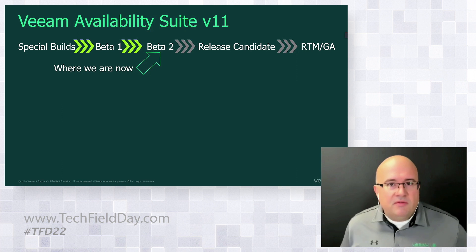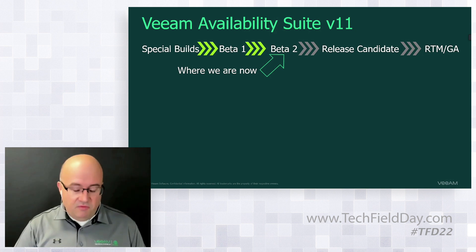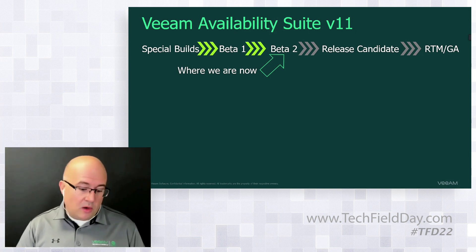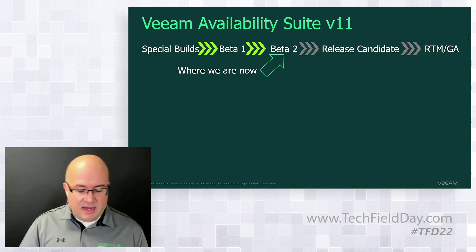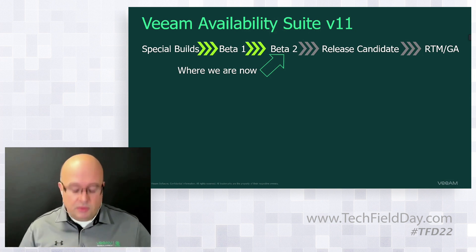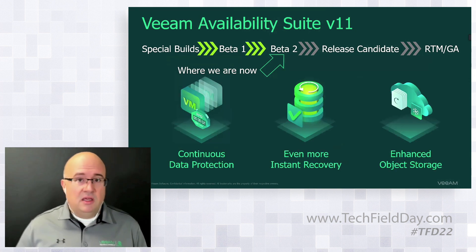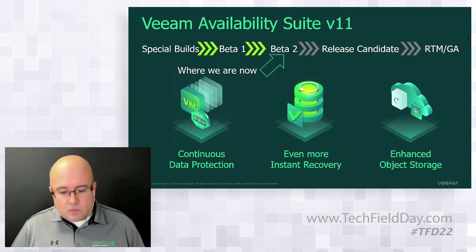A lot of people know about Veeam Backup and Replication, and here at Veeam we do a lot of promotion for the next version. Veeam Availability Suite version 11, which is a combination of Veeam Backup and Replication and Veeam ONE, is due out soon, but where we are right now is in beta 2. We have beta 1, beta 2 where we're at now, and then the time is going to collapse a little bit — we're very close to a release candidate and then a partner release. There are three main top-level storylines that go with version 11.